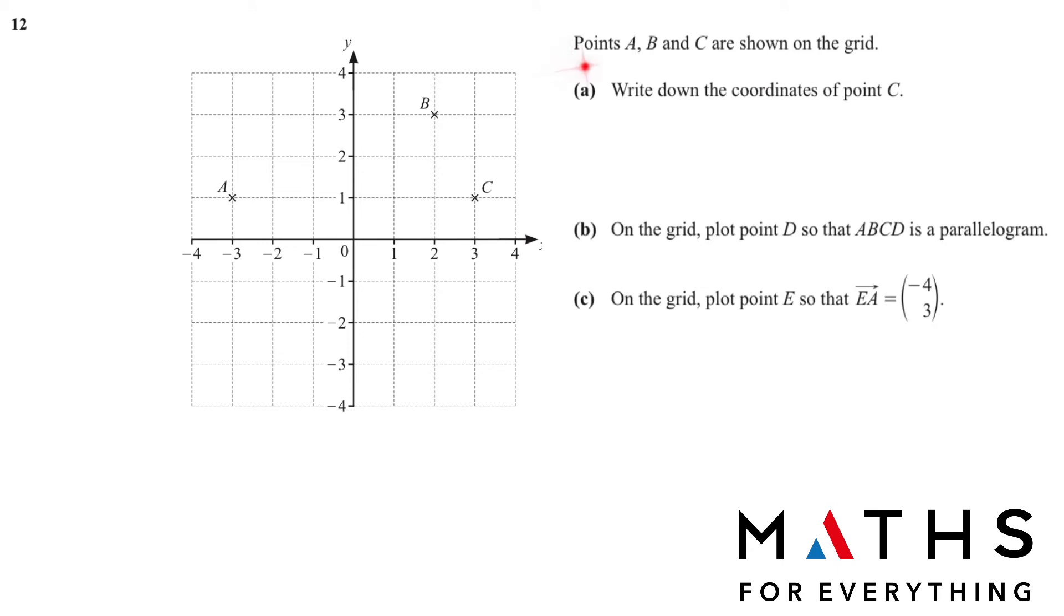Question number 12. Points A, B and C are shown on the grid. Write down the coordinates of point C. When we want to write down a coordinate of a point, we write x first and then y. The value of x we get from the x-axis. This is our x-axis. This is y-axis. Our point C is here. First, the x-axis we go to. We got 3. Then the y-axis, 1. So the coordinates of point C are 3 and 1. We don't need to write this or this.